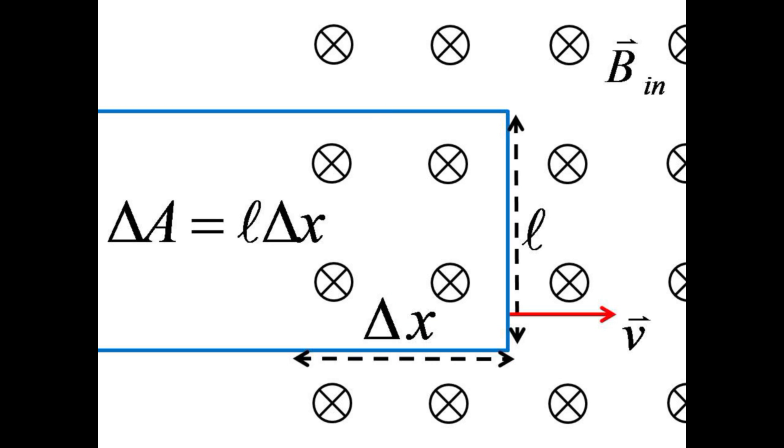If the short side of the rectangle has length L and the loop has entered the field to a distance delta x, the area for flux calculations is the product of L times delta x.